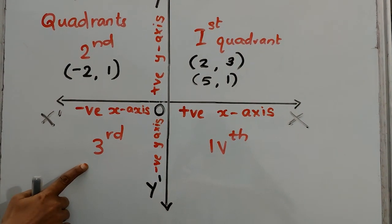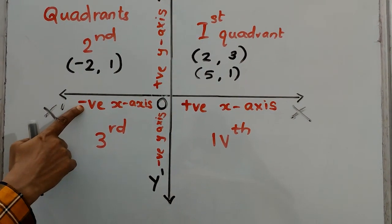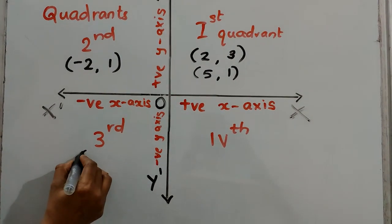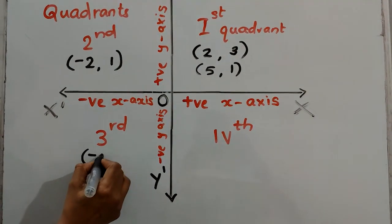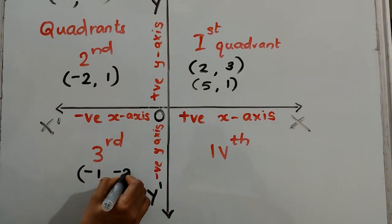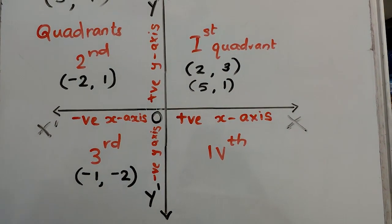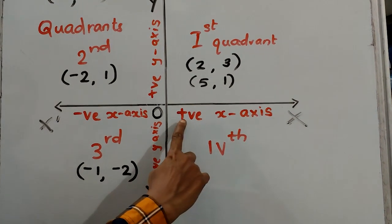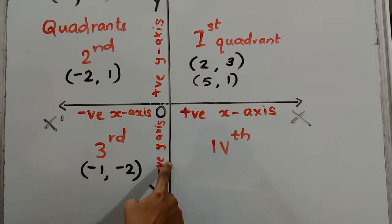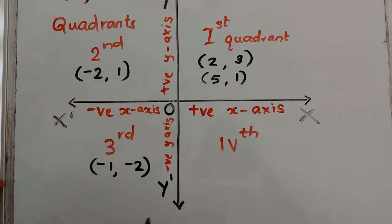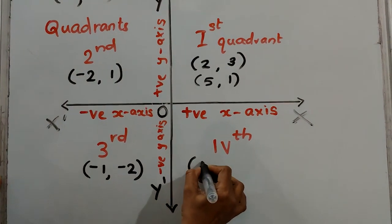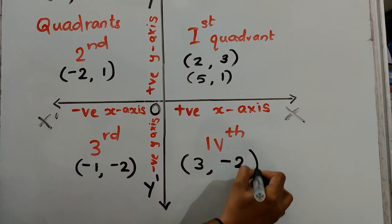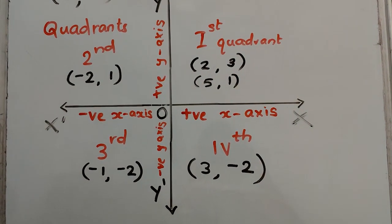In the third quadrant, the negative x-axis and negative y-axis are taken, so both x and y values should be negative. One example is (-1, -2). In the fourth quadrant, the positive x-axis and negative y-axis are considered, so the x value should be positive and the y value should be negative. One example is (3, -2).